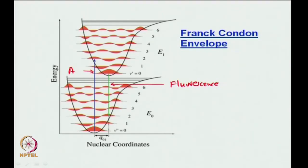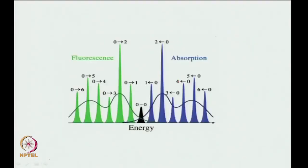If you draw the Franck-Condon overlap, the blue one is absorption and the green one is fluorescence. Absorption is always higher in energy than fluorescence — remember, there is something known as the Stokes shift, we will come to that later. On the higher-energy side you have the absorption bands, on the lower-energy side you have the fluorescence bands. In absorption, the 0-to-2 is the most intense; similarly for fluorescence, the 0-to-2 is again the most intense. There is a progression because other transitions are also available.